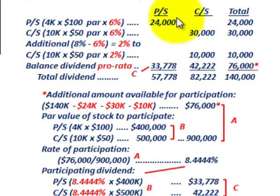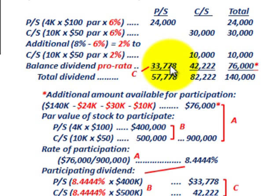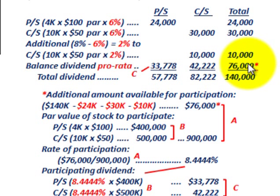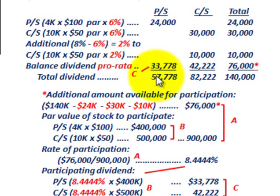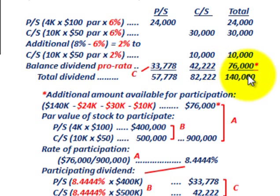Looking at our final allocation: on a prorated basis, preferred stock receives $33,778 and common stock receives $42,222. Total dividend for preferred stock: $24,000 + $33,778 = $57,778. Total for common stock: $82,222. Summing both gives the total dividend allocated of $140,000 — matching the full amount between preferred and common stock.